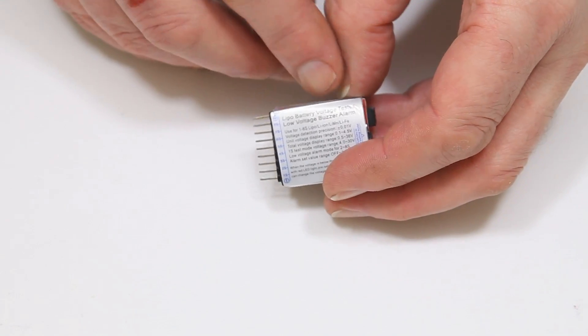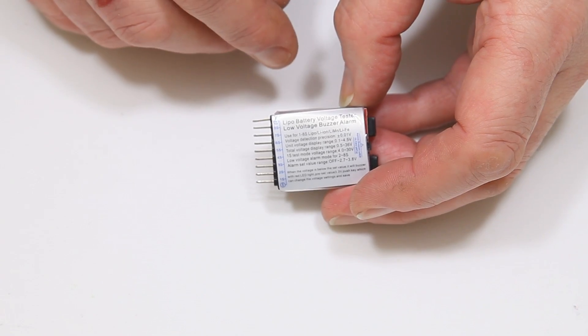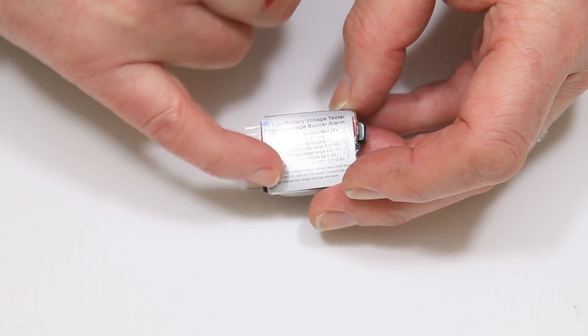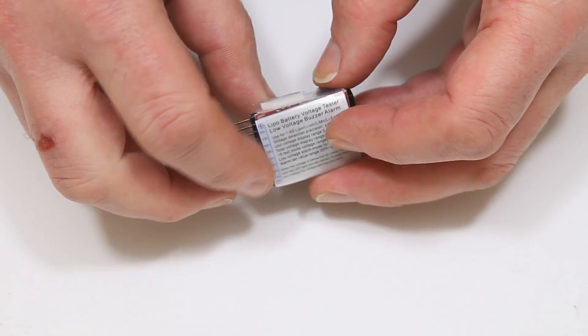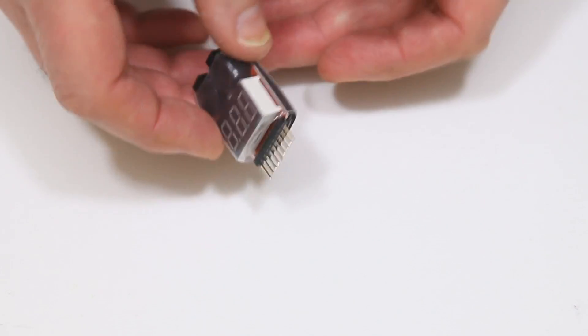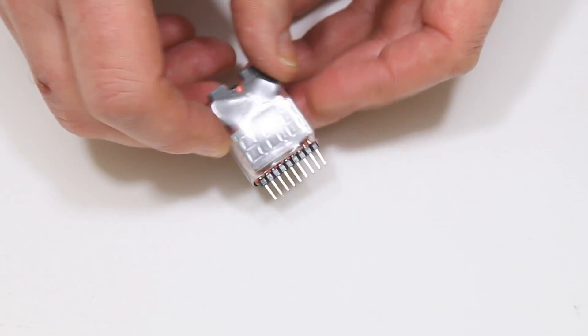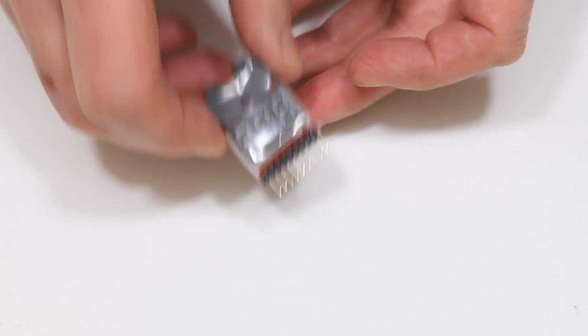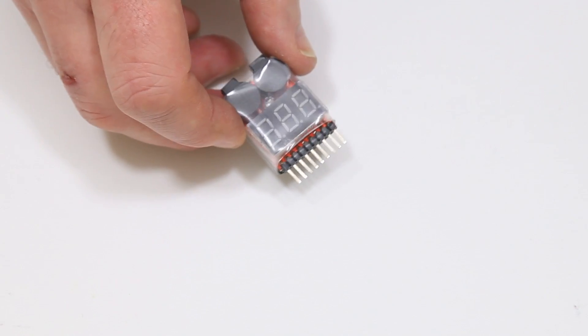It's a LiPo battery voltage tester and low voltage buzzer alarm. The text is pretty small on the back here and basically it measures the voltage between a one and an eight cell battery so it's a one meter all in one, and it's got a buzzer alarm system which I'll show you.